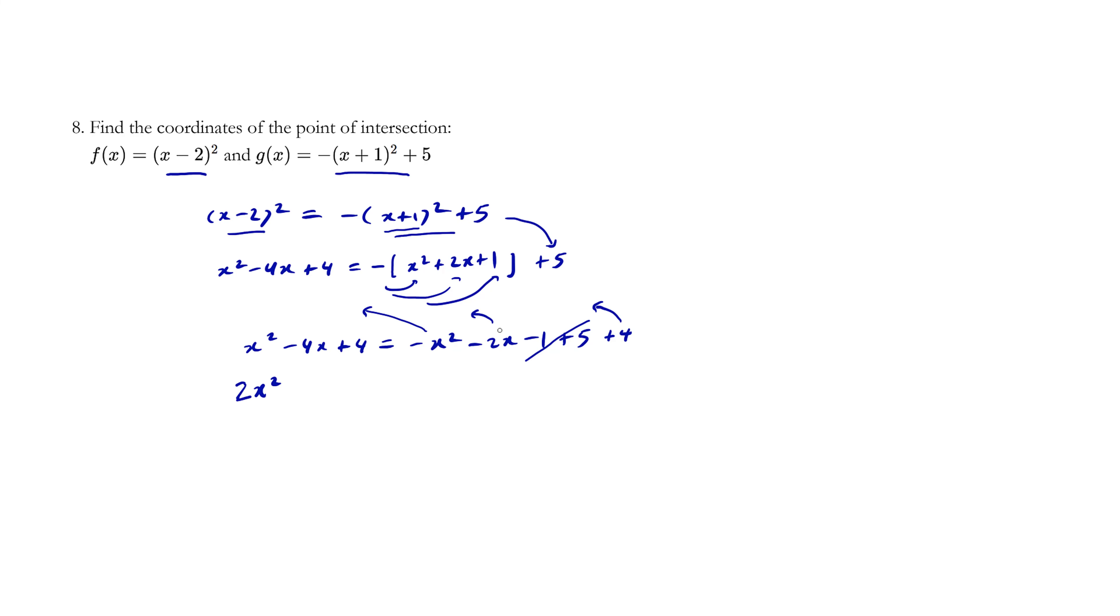We have negative 4x. This becomes plus 2x. Negative 4x plus 2x is negative 2x. And we have 4. The 4s cancel. 4 minus 4 is 0, or you can just cross them out. We have equals 0.